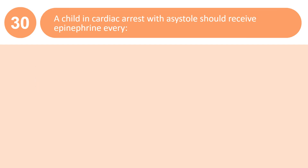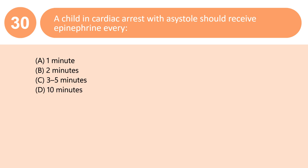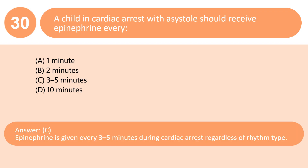A child in cardiac arrest with asystole should receive epinephrine every: A. 1 minute. B. 2 minutes. C. 3–5 minutes. D. 10 minutes. Answer: C. Epinephrine is given every 3–5 minutes during cardiac arrest regardless of rhythm type.